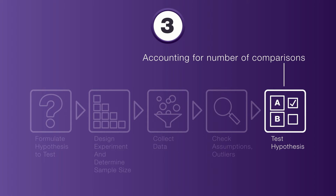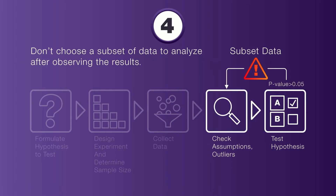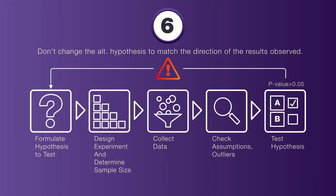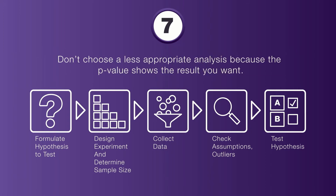Also, don't choose a subset of data to analyze after observing the results. Don't eliminate outliers without identifying a special cause. Don't change the alternative hypothesis to match the direction of the results observed in the data. And finally, don't choose a less appropriate analysis just because the p-value shows the result you want to see.